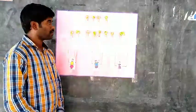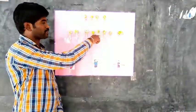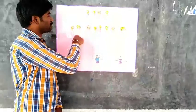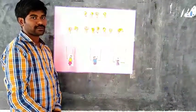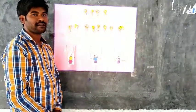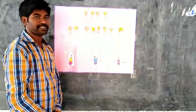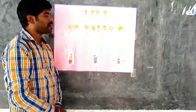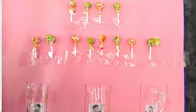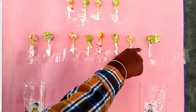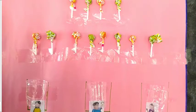Children, what do you see on the chart? Yes, very good. These are lollipops. Children, do you like lollipops? Yes, we all like lollipops very much. Okay children, we will eat these lollipops after the completion of class. First, we will count how many lollipops are there on the chart. Will you count with me?